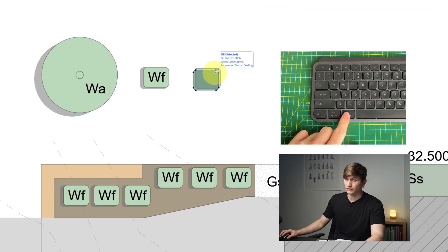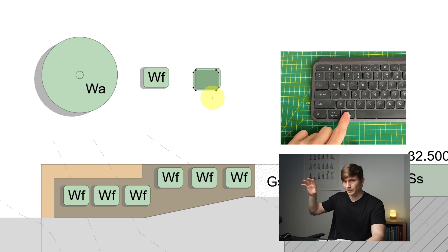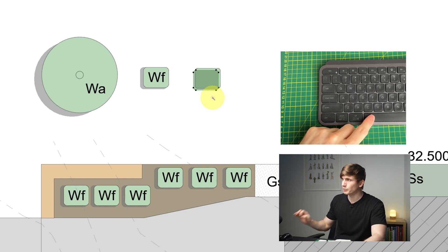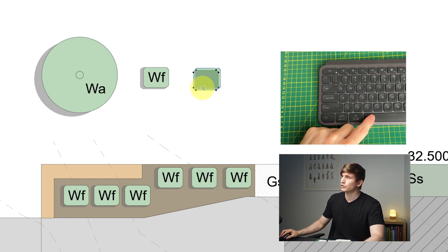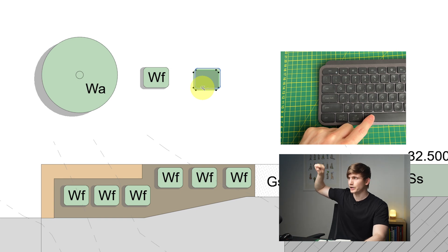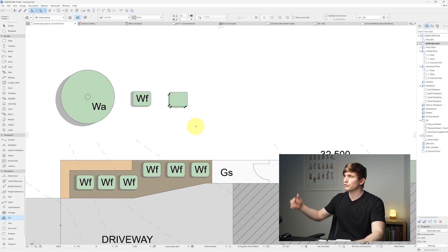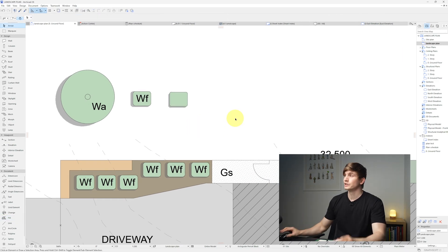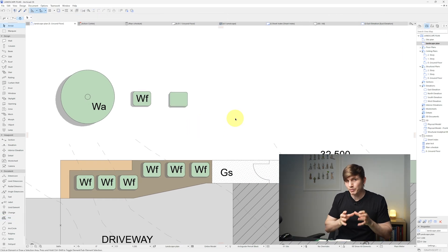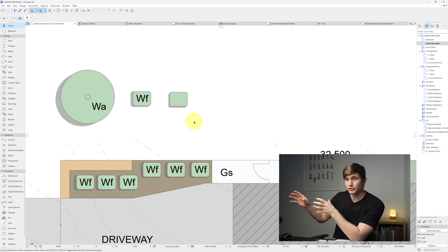Hold Alt to activate the eyedropper and select the fill while it's active. Then hold Spacebar to activate the magic wand tool. Hover over the edge until you see the blue outline around the plan, then click. This crops off the shadow so it's only showing on one side, creating a little bit of extra depth.